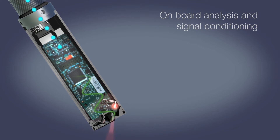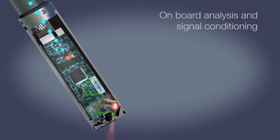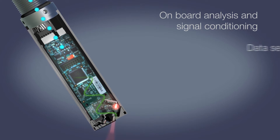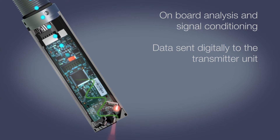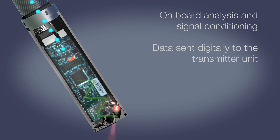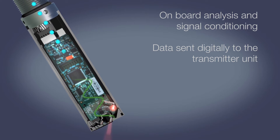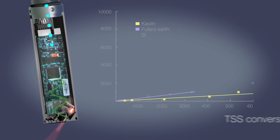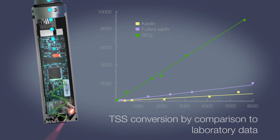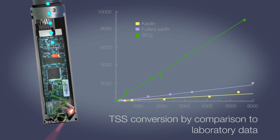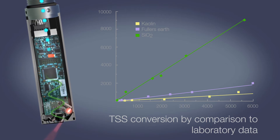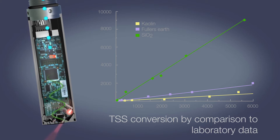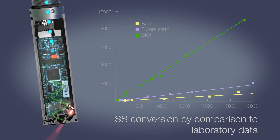The scattered light detected by the sensor is directly proportional to the turbidity of the sample. Analysis and signal conditioning is conducted within the robust sensor housing and transmitted digitally to the transmitter. The turbidity measurement can be used to determine the total suspended solids, or TSS, of the sample by comparison to laboratory data.